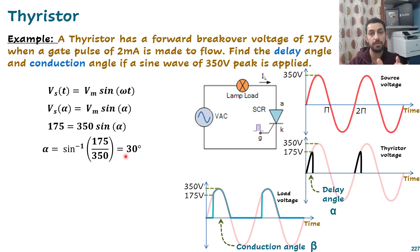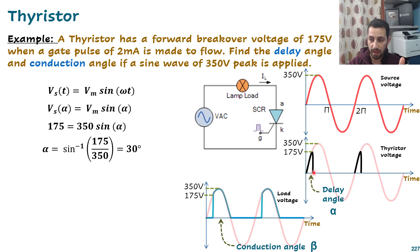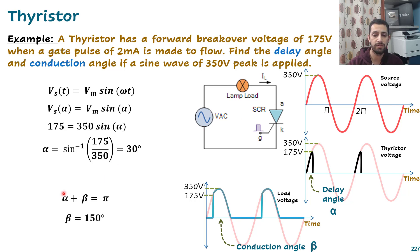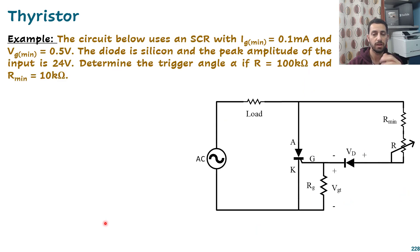I have to wait 30° in phase before turning on the thyristor. The conduction angle β equals π minus α, because the delay angle and conduction angle sum to π (180°). With α = 30° and π = 180°, the conduction angle β = 180° − 30° = 150°. Let's move to another example.